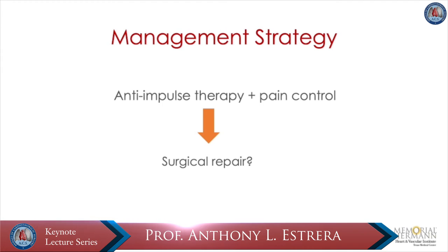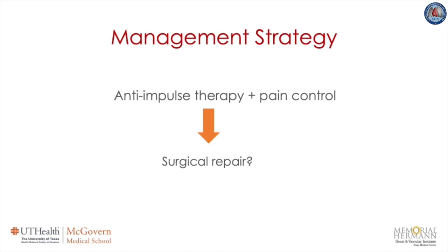Beta blockers such as metoprolol or labetalol are used as blood pressure control agents. These are initiated to maintain heart rate of less than 60 beats per minute and systolic blood pressure between 100 and 120 mmHg, thereby decreasing aortic stress and minimizing lesion progression. Alternative agents including calcium channel blockers or vasodilators should not be used without first controlling the heart rate with beta blockers, since vasodilators alone can reduce reflex activation of the sympathetic nervous system, leading to enhanced ventricular contraction and increased aortic stress.